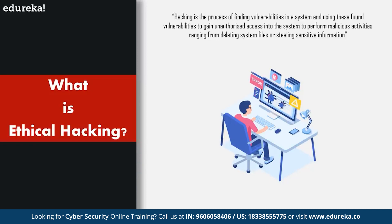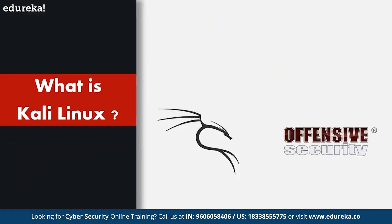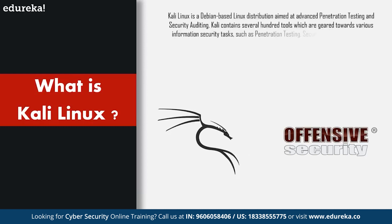Now that we know what ethical hacking is and who ethical hackers are, let's move to the hero of our video today — Kali Linux. Kali Linux is a Debian-based Linux distribution aimed at advanced penetration testing and security auditing. It contains several hundred tools geared towards information security tasks such as penetration testing, security research, computer forensics, and reverse engineering. Kali Linux is developed, funded, and maintained by Offensive Security, a leading information security training company. It was released on the 13th of March 2013 as a complete top-to-bottom rebuild of BackTrack Linux, adhering to Debian development standards.